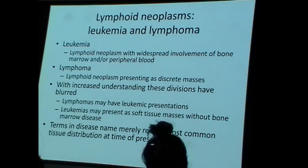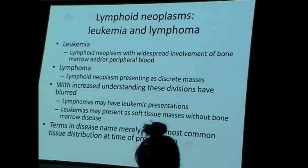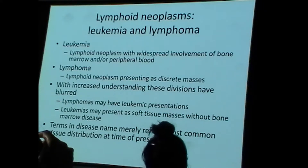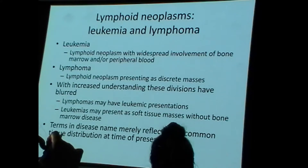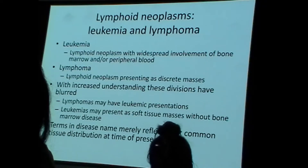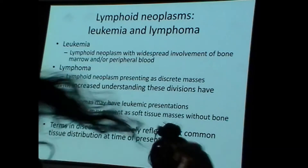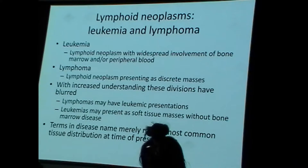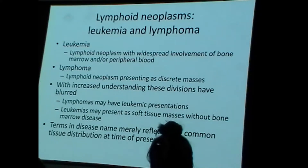Leukemias are lymphoid neoplasms that are liquid cancers floating around the bone marrow and the peripheral blood — you can draw someone's blood and identify them. Lymphomas are lymphoid neoplasms that present as discrete masses — most likely occurring in a lymph node. About two-thirds of lymphomas occur in lymph nodes and the remainder are extranodal. The division is somewhat artificial because lymphomas can have a leukemic phase and leukemias can sometimes present as discrete masses.